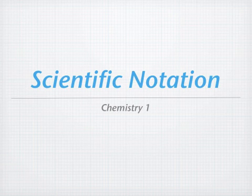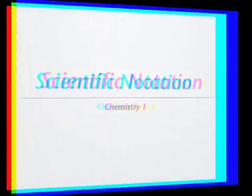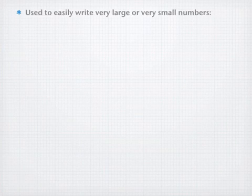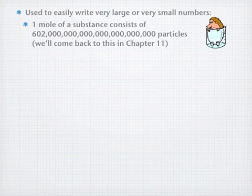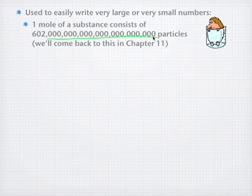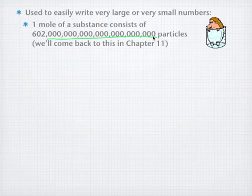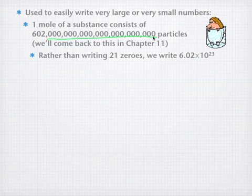Welcome to Scientific Notation, the second video in our Chapter 2 unit on data analysis. Scientific notation is used to easily write very large or very small numbers. For example, we have in chemistry this thing called the mole. The mole is 602 followed by 21 zeros particles. It's very hard to write those zeros out all the time, so we allow you to condense this.